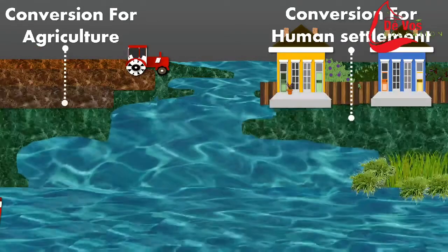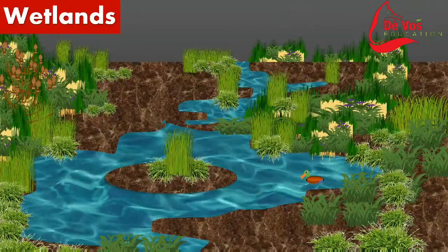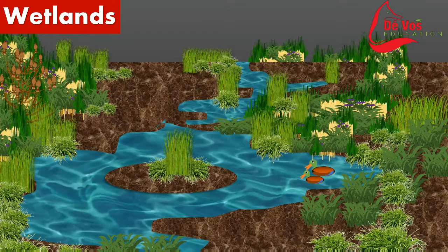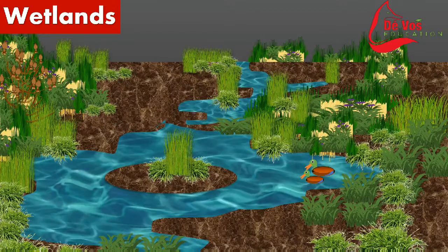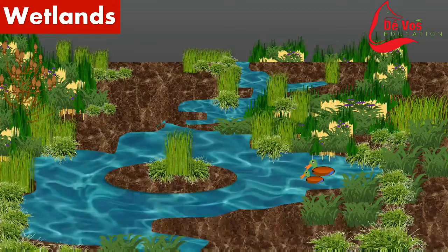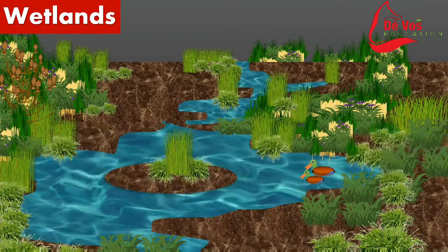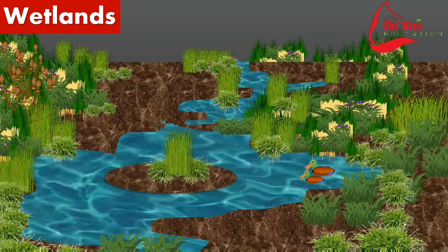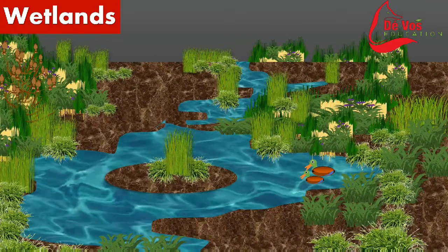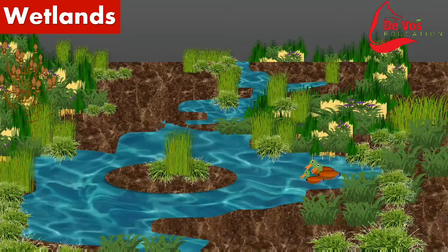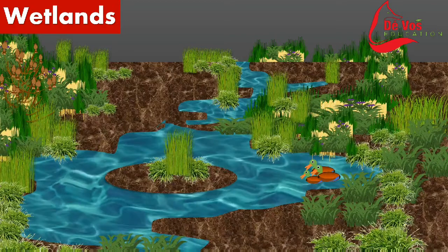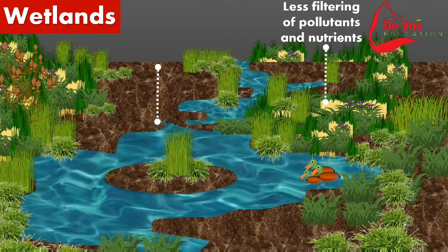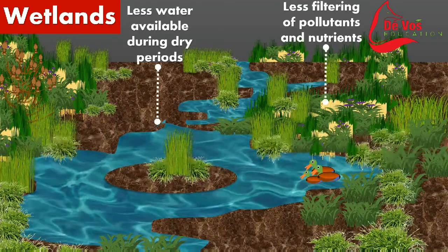More than a billion people make a living from wetlands as they provide vital benefits including food, fiber, flood protection, water purification and water supply. Unfortunately, freshwater wetlands are being lost and degraded faster than any other ecosystem type on the planet.